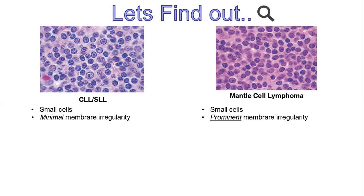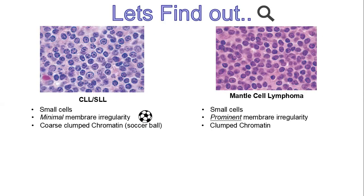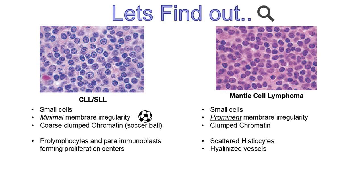These are mature B-cell lymphomas, and CLL/SLL resembles a mature lymphocyte most closely in its membrane regularity. The chromatin of CLL is specifically called soccer ball chromatin due to its coarse clumped appearance. There are proliferation centers in CLL/SLL composed of prolymphocytes and paraimmunoblasts, while these are not seen in mantle cell lymphoma. On the other hand, scattered histiocytes and hyalinized vessels are seen in mantle cell lymphoma, not in CLL/SLL. IHC is very important to differentiate between the two.